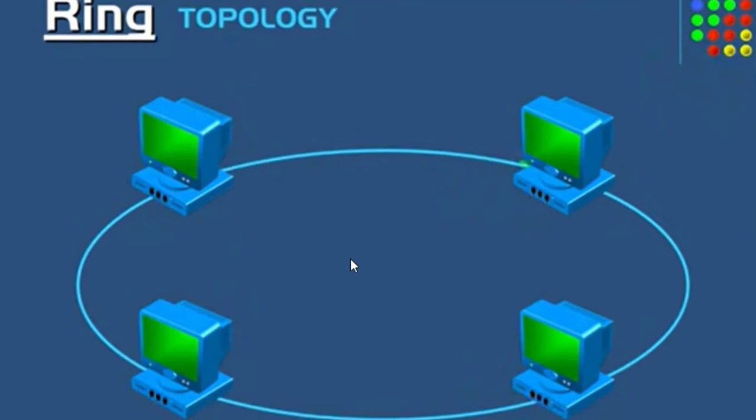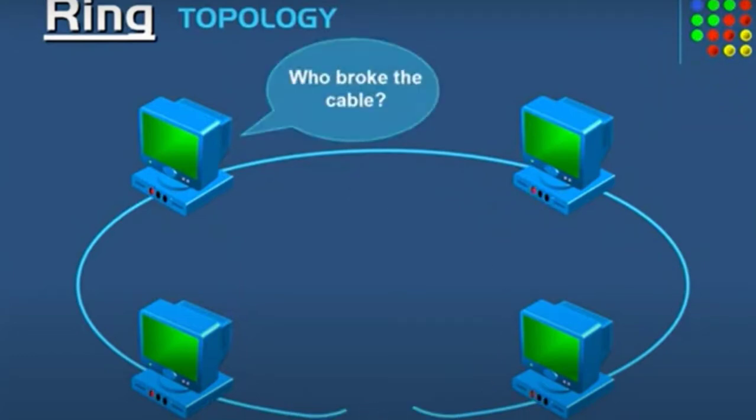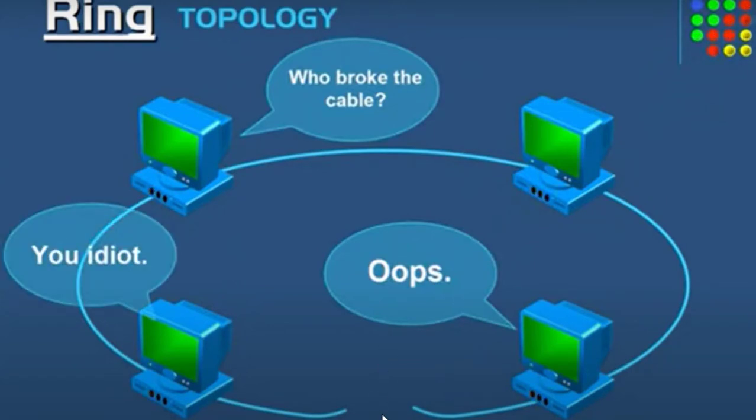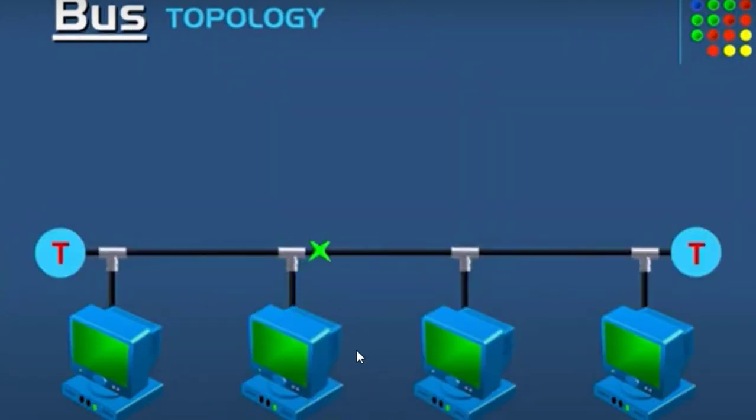Kekurangannya, jika salah satu node mengalami permasalahan, maka keseluruhan jaringan ini akan mengalami gangguan. Contoh, di sini jika terdapat satu kabel yang menghubungkan satu komputer dengan komputer yang lainnya rusak atau terdapat kendala, maka keseluruhan komputer akan mendapat masalah.